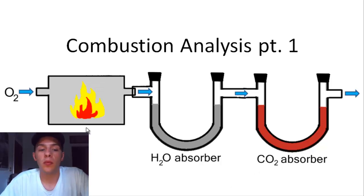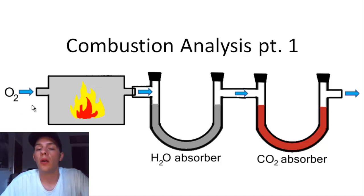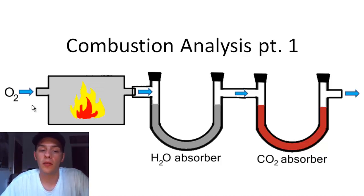The way that this works is before actually burning your sample, you're going to allow oxygen gas to continuously flow through the system. This is called purging the system — you're purging the system with oxygen gas, forcing out all that air so you have nothing but oxygen continuously flowing through the system.